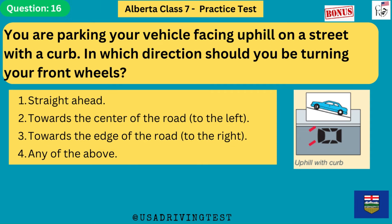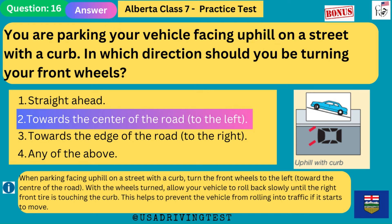You are parking your vehicle facing uphill on a street with a curb. In which direction should you be turning your front wheels? 1. Straight ahead. 2. Towards the center of the road, to the left. 3. Towards the edge of the road, to the right. 4. Any of the above. The answer is 2: towards the center of the road, to the left. When parking facing uphill on a street with a curb, turn the front wheels to the left toward the center of the road, then allow your vehicle to roll back slowly until the right front tire is touching the curb. This helps prevent the vehicle from rolling into traffic.